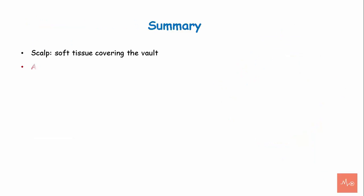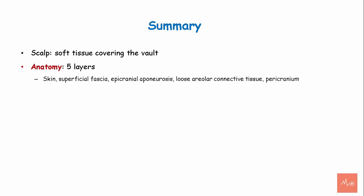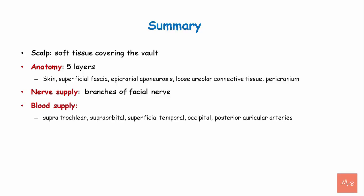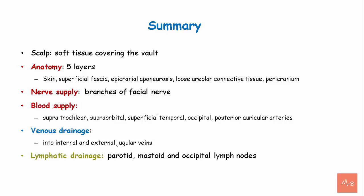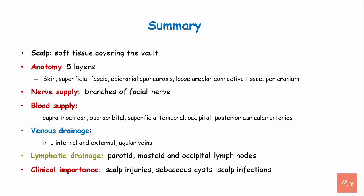To summarize: the scalp is a soft tissue covering the cranial vault with five anatomical layers — skin, superficial fascia, aponeurosis, loose areolar connective tissue, and pericranium. Nerve supply comes from branches of the trigeminal and facial nerves. Blood supply is through the supratrochlear, supraorbital, superficial temporal, occipital, and posterior auricular arteries. Venous drainage occurs into the internal and external jugular veins. Lymphatic drainage goes to the parotid, mastoid, and occipital lymph nodes. The scalp has clinical importance especially regarding scalp injuries, sebaceous cysts, and scalp infections.